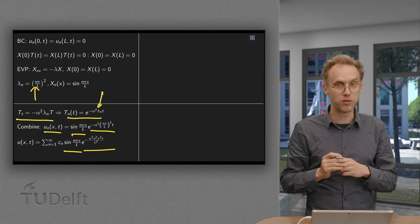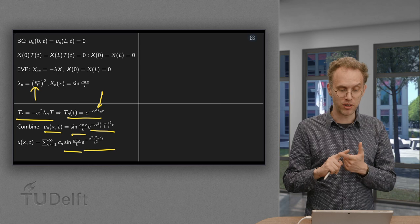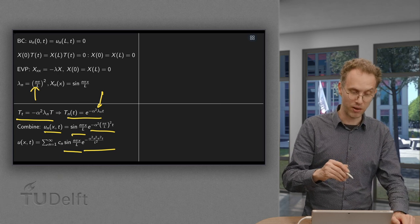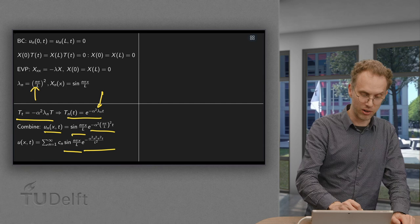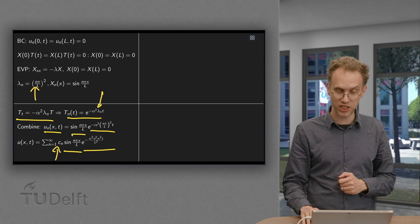Where we took care of our PDE and we took care of our boundary conditions. We did not take care yet of our initial condition. And our initial condition is going to determine our CN, our constant CN.